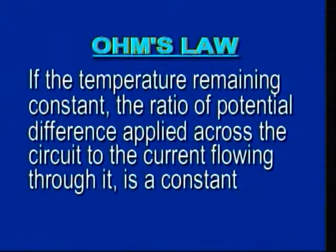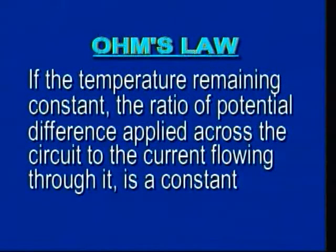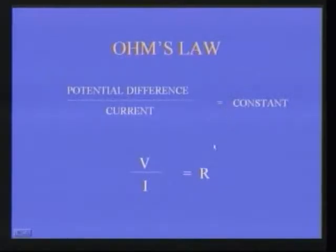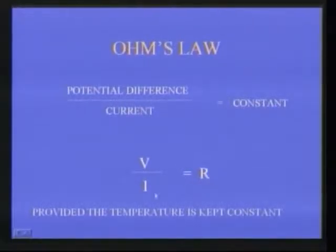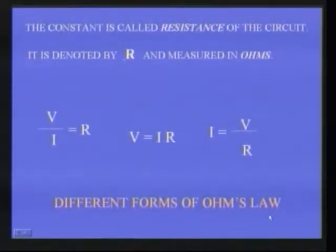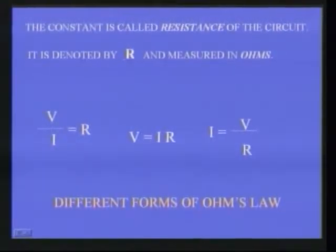Now let us see Ohm's law. Ohm's law states that, the temperature remaining constant, the ratio of potential difference applied across a circuit to the current flowing through it is a constant. So, potential difference divided by current equals a constant: V/I = R, provided the temperature is kept constant. This constant is called the resistance of the circuit, denoted by R, and the unit for resistance is Ohms.